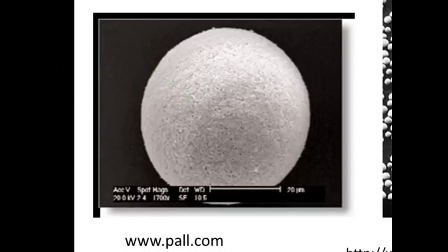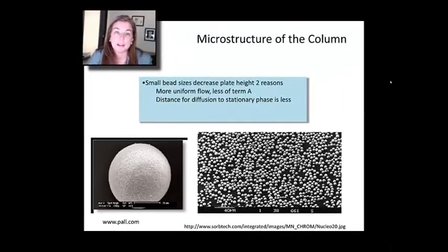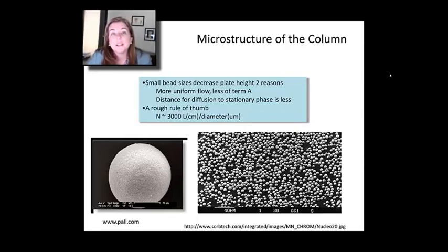Small beads are going to be preferred from a resolution perspective. They're going to give you the smallest plate height, the most uniform flow through the column. And that's simply because when you have a lot of big balls, things are going to wander and take very different kinds of paths. If you have a lot of smaller balls, then the difference between the random path lengths will generally be less. A rough rule of thumb is the number of plates in an HPLC column is 3,000 times its length in centimeters divided by its diameter in microns. We're not going to derive it. It's just a rough rule of thumb.